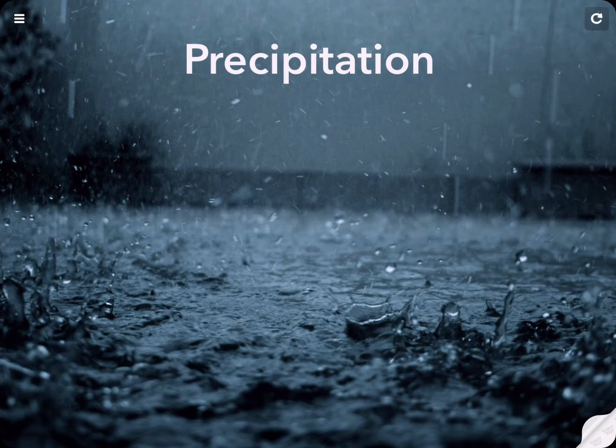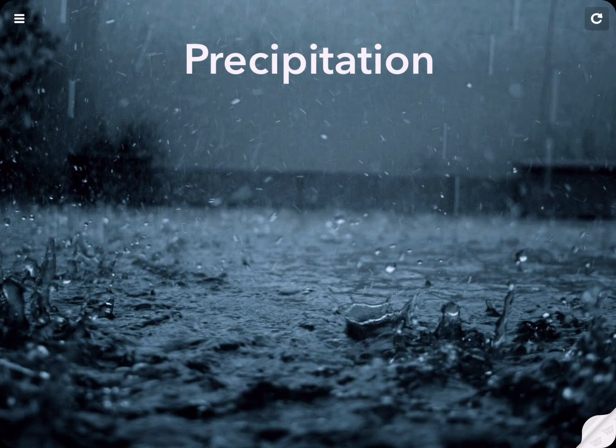Precipitation. Precipitation is water that falls from the atmosphere in the form of rain, sleet, snow, hail, or freezing rain.